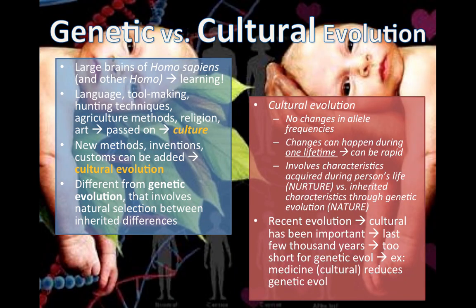We'll end with a short discussion of the differences between genetic and cultural evolution. Everything discussed so far has been about genetic evolution — changes in gene and allele frequencies over time. As Homo sapiens, we have large brains and know how to learn a lot. Language, tool making, hunting techniques, agricultural methods, religion, art — this is all culture. We can pass it on via the internet, books, and more. New methods, inventions, and customs can be added — this is cultural evolution.